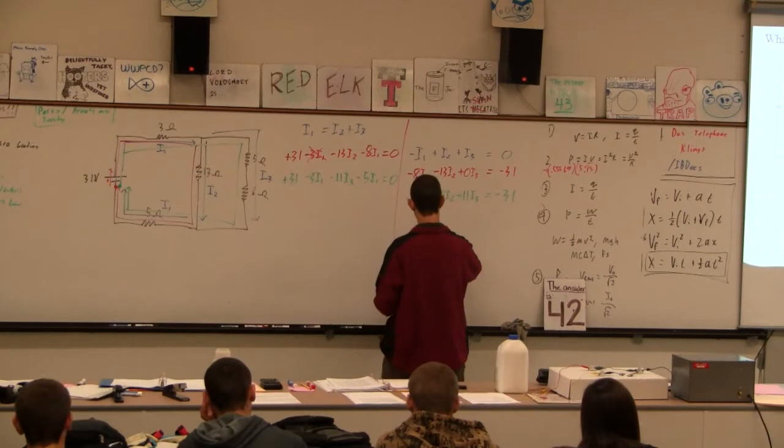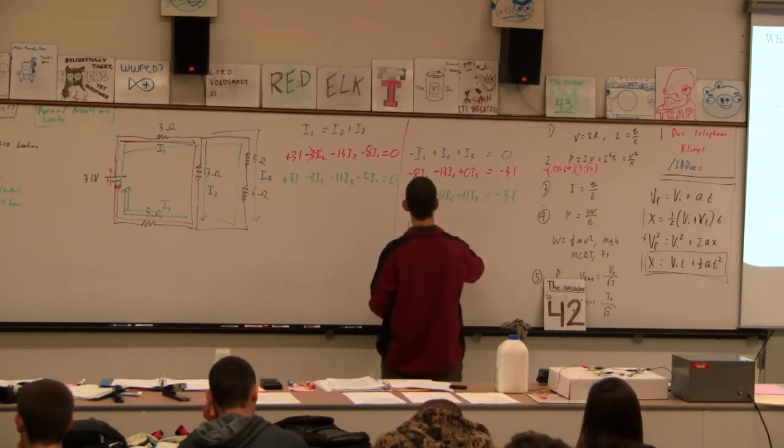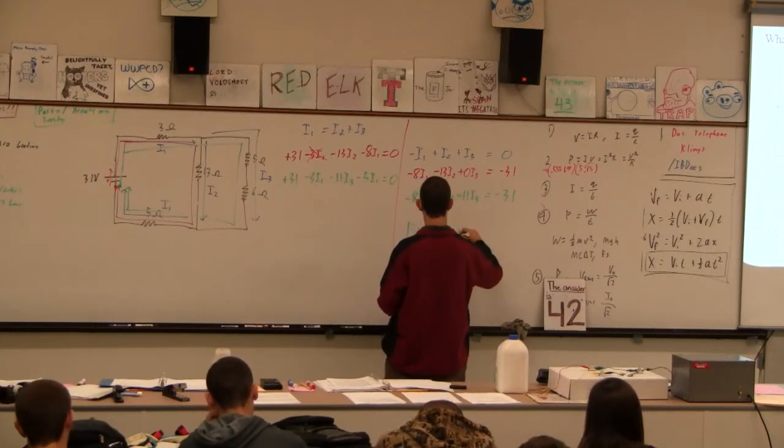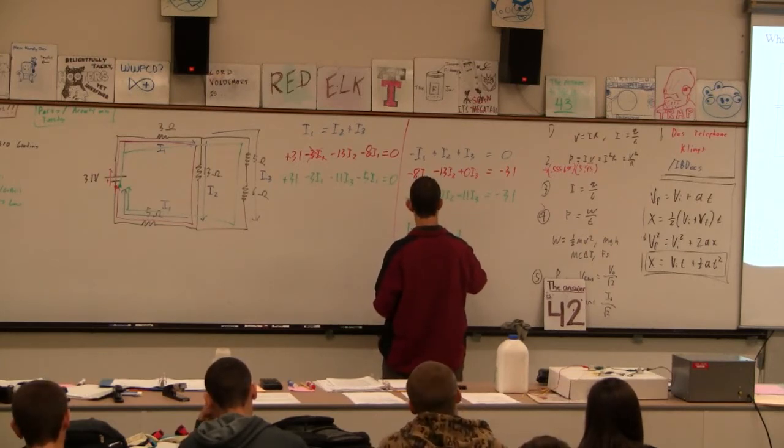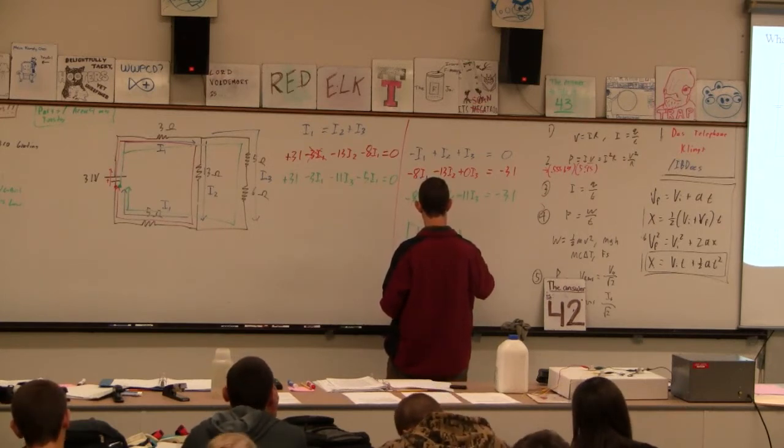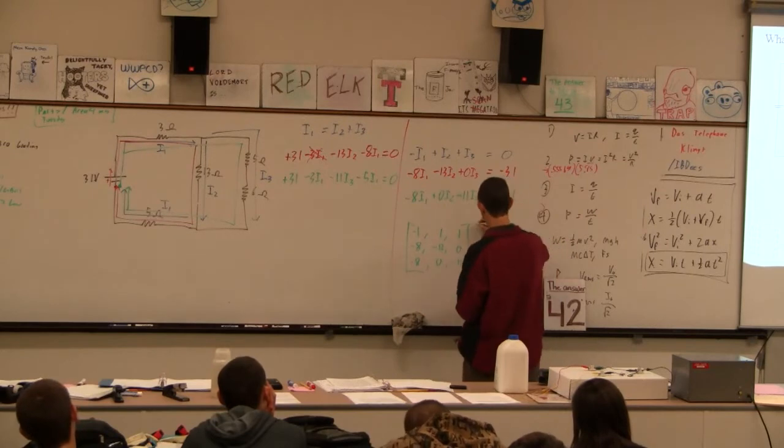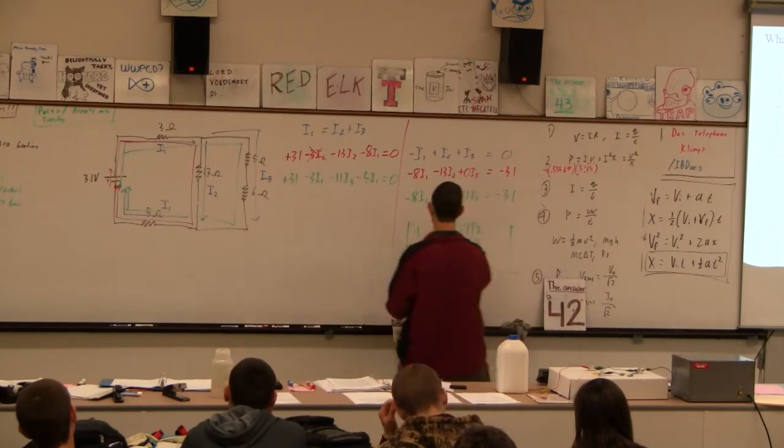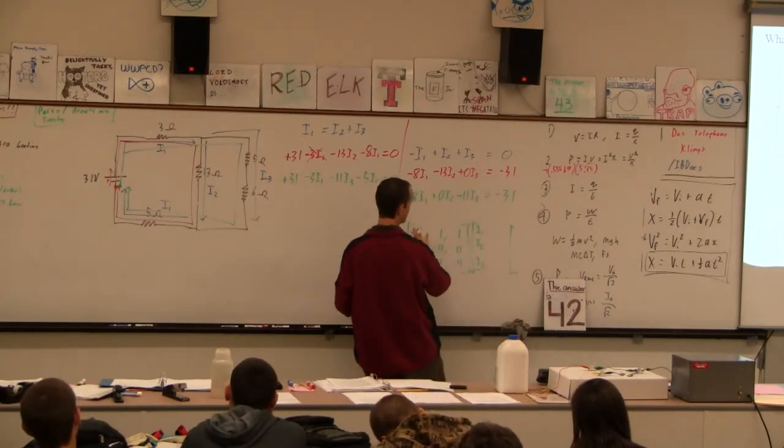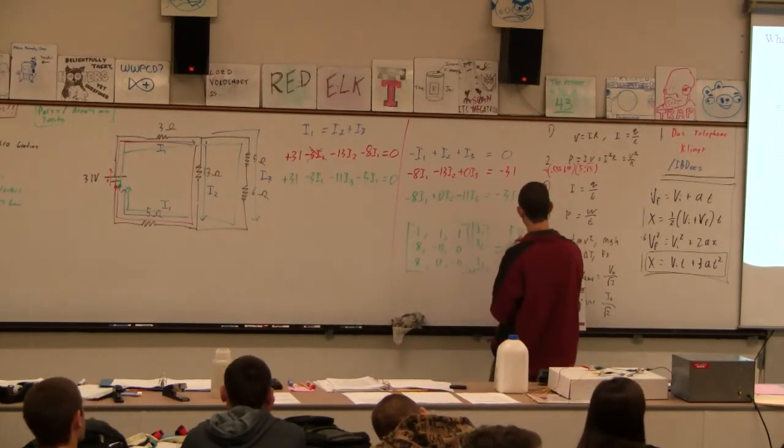So our matrix is minus 1, 1, 1, minus 8, minus 13, 0, minus 8, 0, minus 11. And this is times I1, I2, I3, and that's because these are I1, I2, I3. Is that right? And they just slide like that. And then that equals 0 minus 31 minus 31.